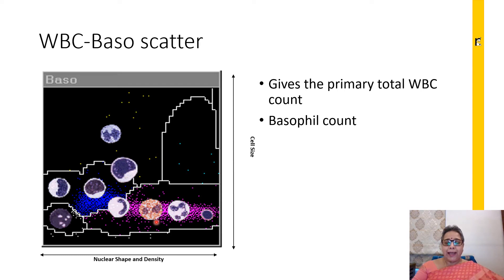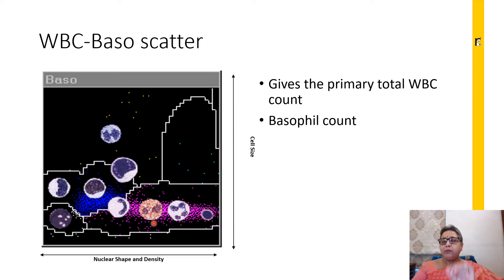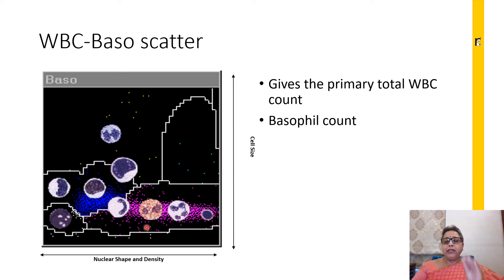It is important to know the normal scatter of the white blood cells for your specific cell counter before you try to identify abnormalities. You need to know where different cells fall, where atypical cells fall, where immature cells form, and where blasts will fall — and this is specific to every cell counter. From one cell counter it will not be the same as another. The primary job is to understand the normal scatter, because once you know normal you can always find what is abnormal — the more normal your eyes see, the faster they will pick up the abnormal.